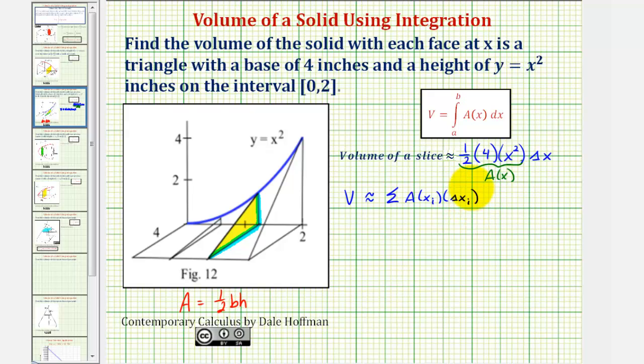And the idea is, if we let the number of slices approach infinity, it would equal this definite integral here. So we can say the actual volume of the solid equals the integral of a of x, which again is the area of any face, which would be one-half times four times x squared, or just two x squared, integrated with respect to x from zero to two.